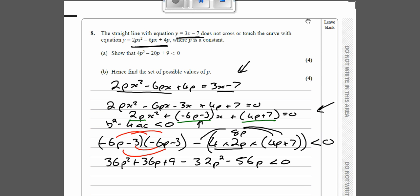Now if we tidy all that up, you've got 36p² take away 32p², which is 4p². So 36p take away 56p is minus 20p, and you've got this plus 9 on the end, and all that is less than 0, which is what we've got here.